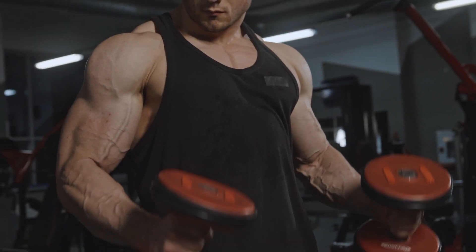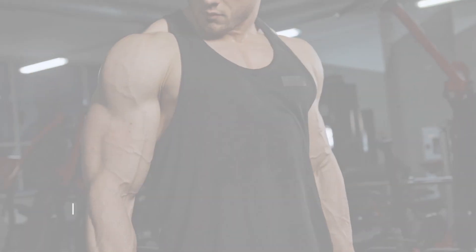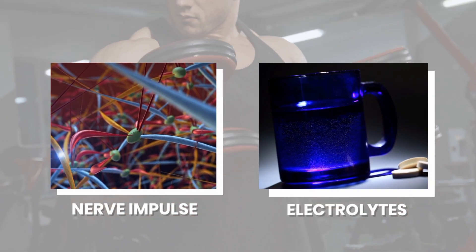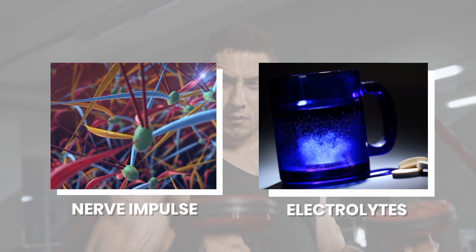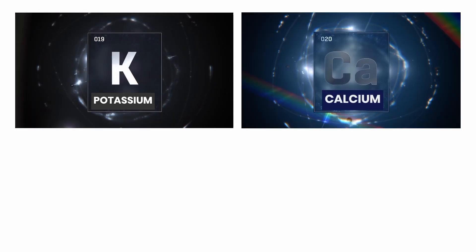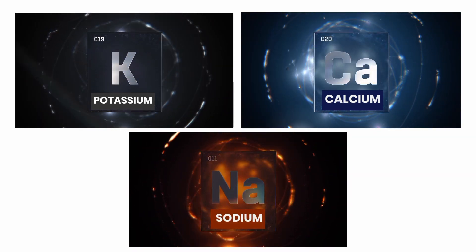Now, for a muscle to contract, it needs two basic components: a nerve impulse and electrolytes. Electrolytes are minerals that carry an electric charge when dissolved in a liquid. Some of the most common electrolytes are potassium, calcium, sodium, and bicarbonate.